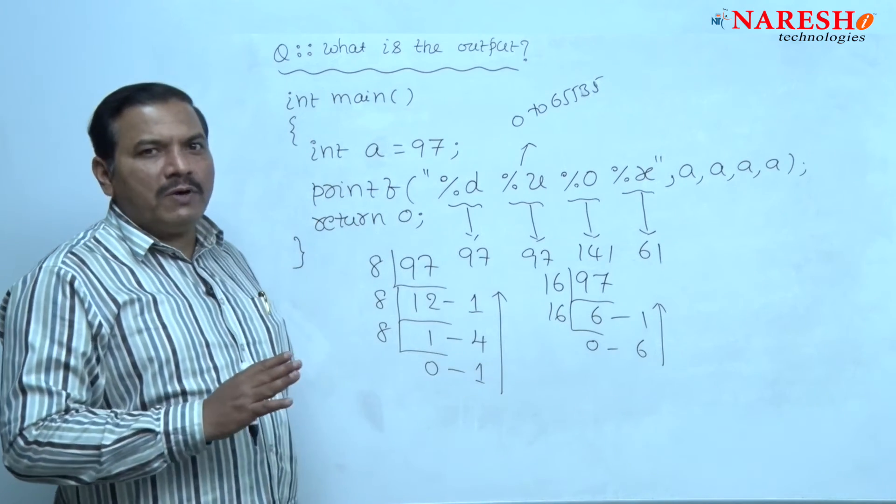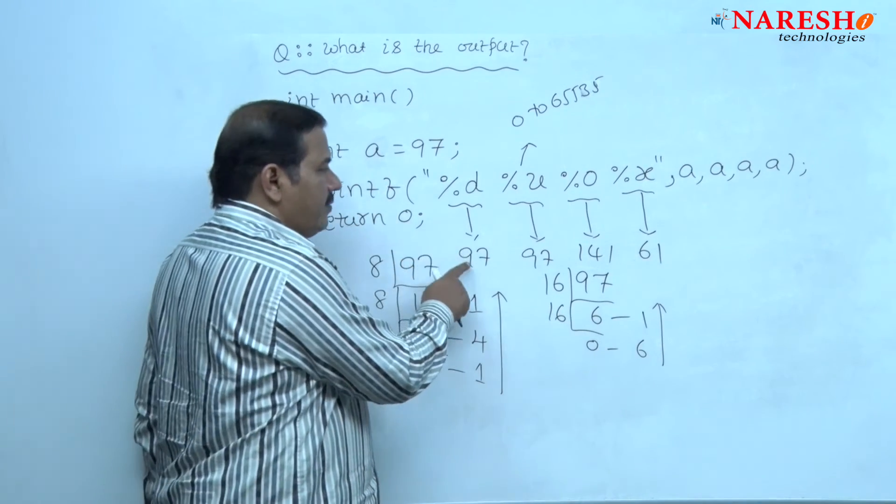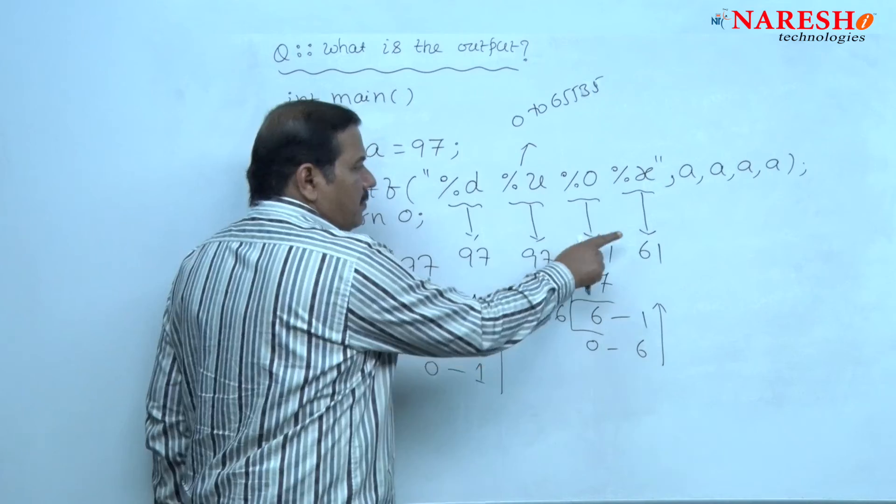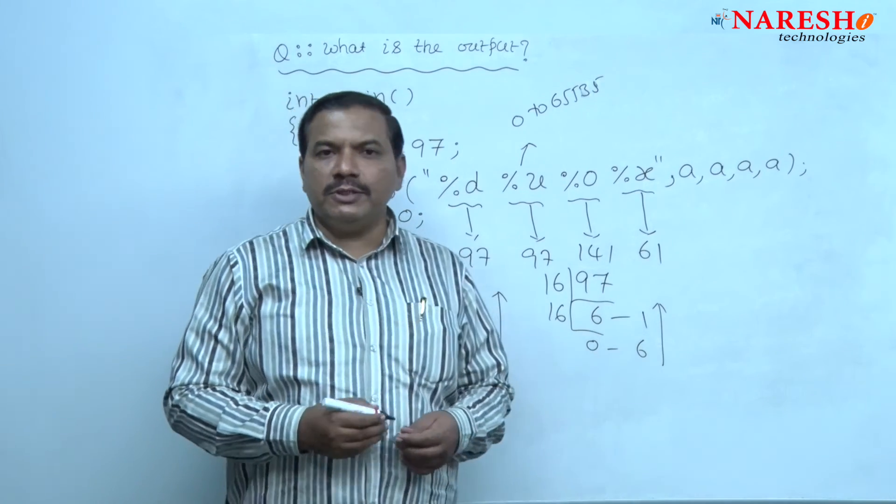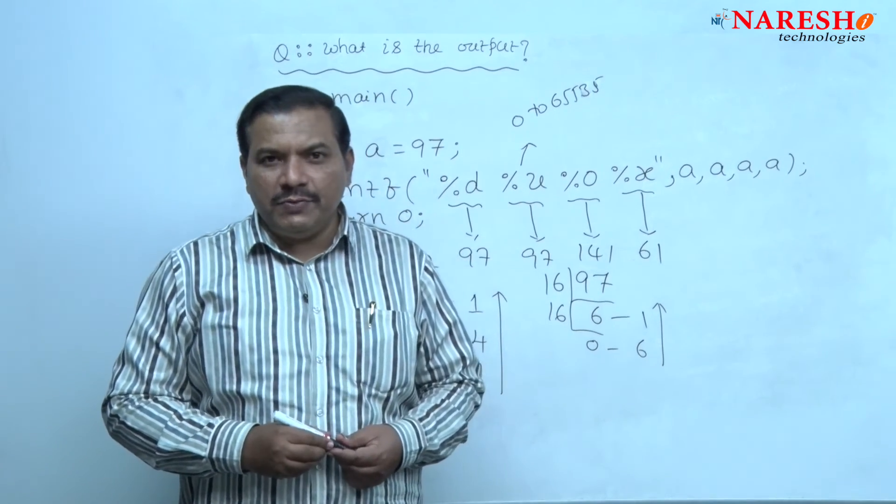Hence, the final output of this code is 97, 97, 141 and 61. That is all about this question. Thank you for watching this video.